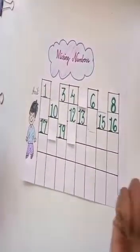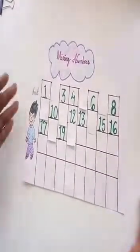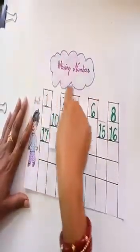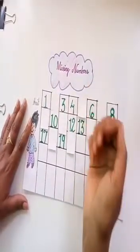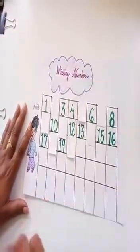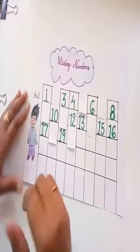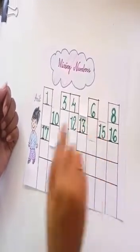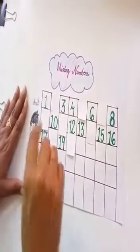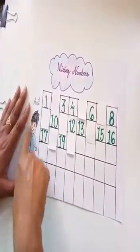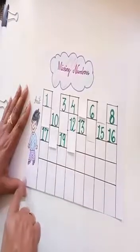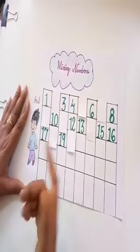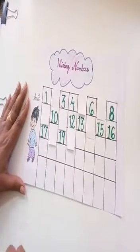Children, what are we going to do today? Let's see. It is written 'missing number.' It means today we are going to do missing numbers. Now you can see there a picture. The name of this boy is Amit. He will also find out numbers with us.